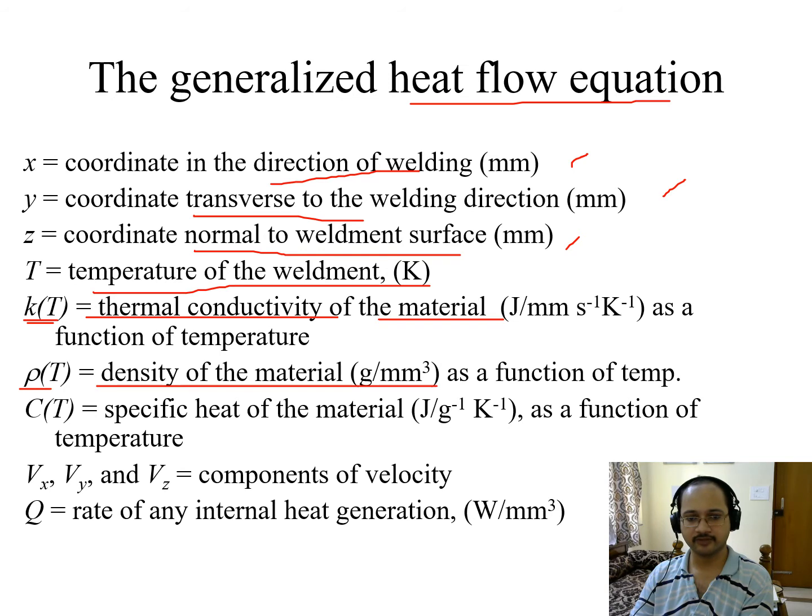Small k is for the thermal conductivity of the material. Rho is density of the material in grams per millimeter cube. Specific heat of the material is denoted by C. Vx, Vy, Vz are the components of the weld velocity. Q is the rate of any internal heat generation per millimeter, that is per unit volume.